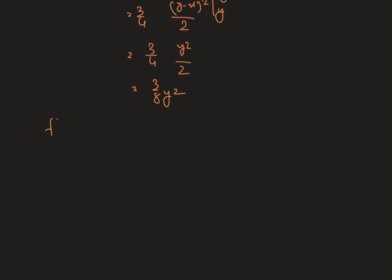Now we have to find the conditional density of x given y. We can write it as f of x y divided by f of y. The joint density is 3 by 4 y minus x and the marginal is 3 by 8 y square.